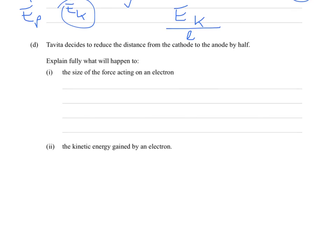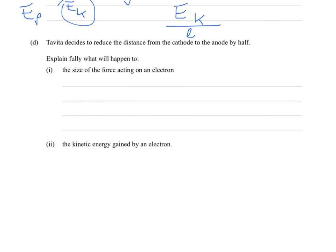D. Tavita decides to reduce the distance between the cathode to the anode by half. Explain fully what will happen to the size of the force acting on an electron. And two, the kinetic energy gained by an electron. Okay, so the force is equal to the electric field strength.